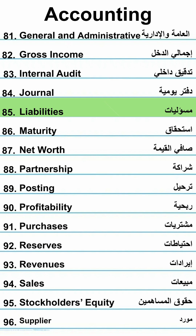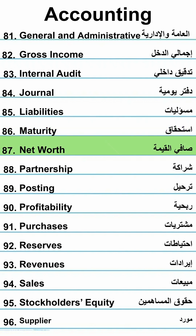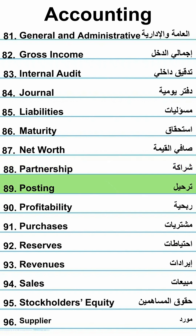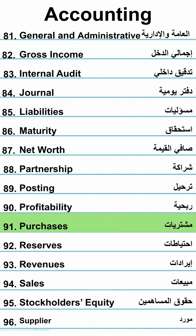Liabilities. Maturity. Net worth. Partnership. Posting. Profitability — Rabhiya.